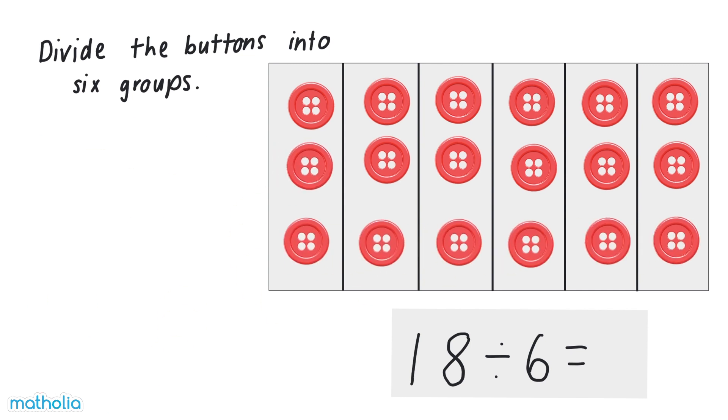We've used up all the buttons. In each group there are three buttons, so 18 divided by six equals three.